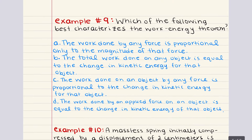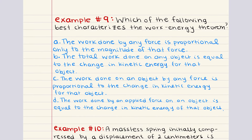Let's tackle problem nine next. Problem nine asks which of the following best characterizes the work-energy theorem. The work-energy theorem states that the net work done on an object is equal to the change in its kinetic energy. Mathematically, this is written as delta KE equals one half mv_final squared minus one half mv_initial squared, where m is mass, v_f is final velocity, and v_i is initial velocity. This theorem tells us that when work is done on an object, its kinetic energy changes as a result.